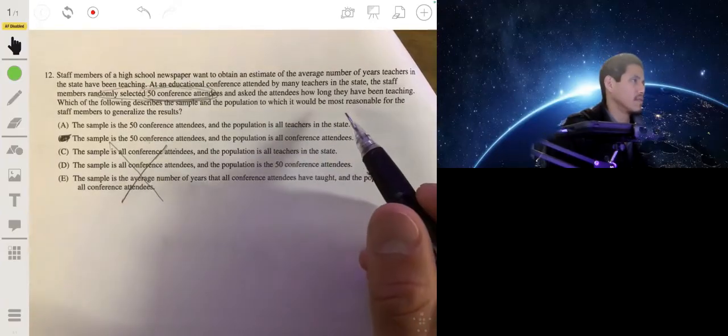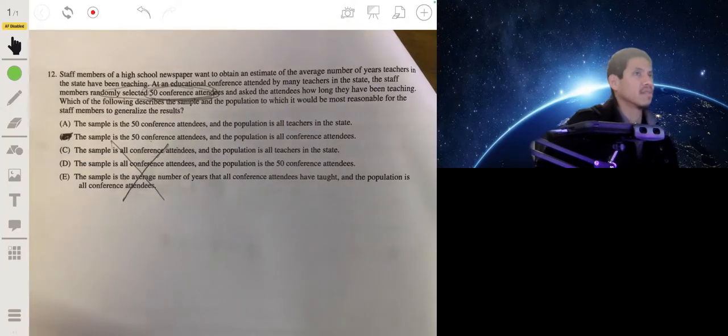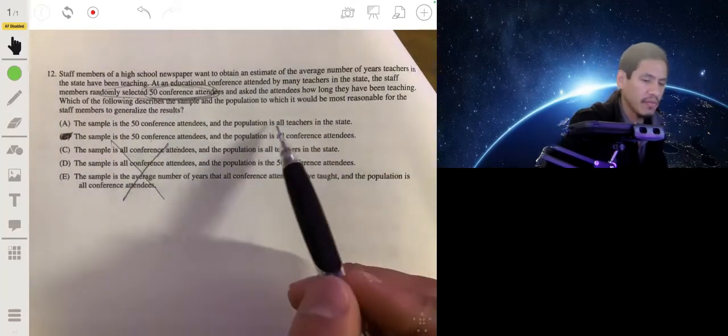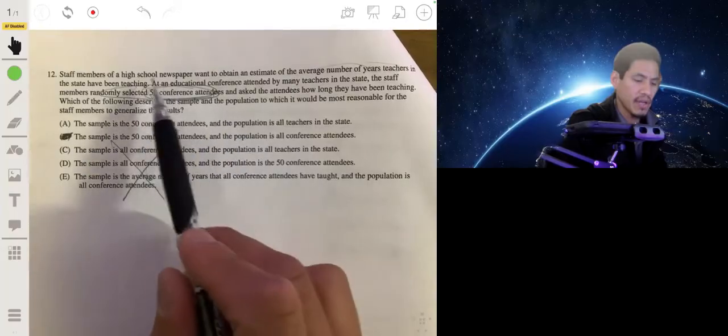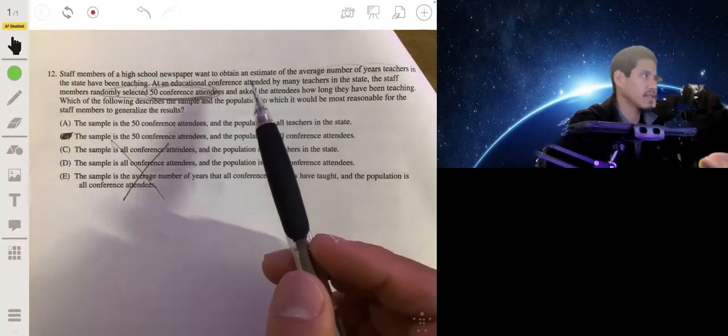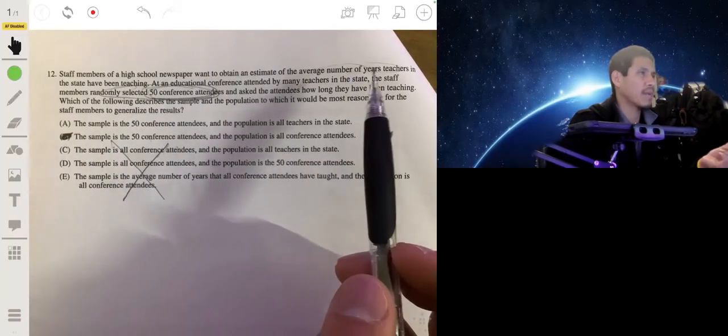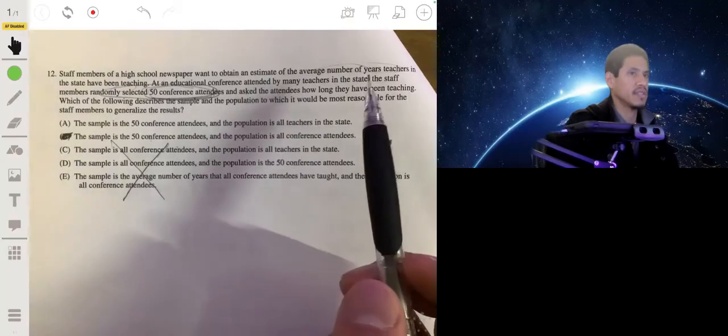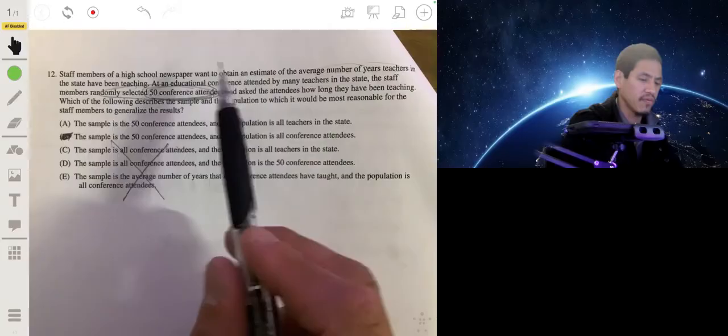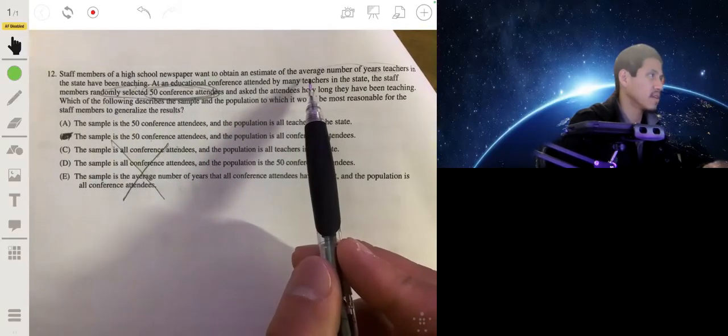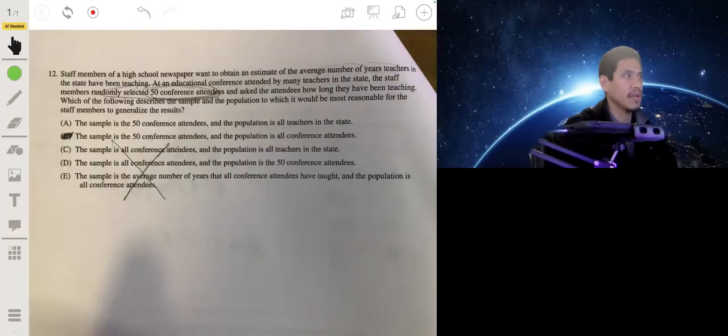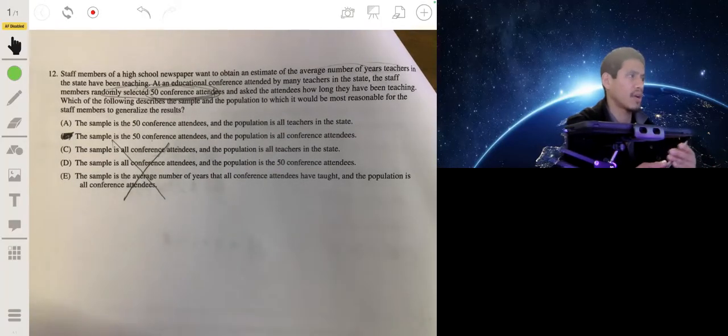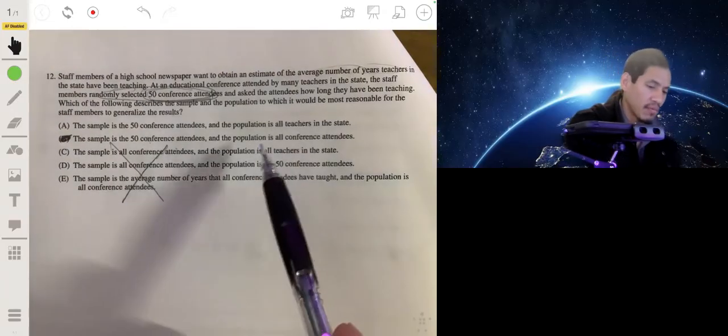This is a little tricky to understand. Even though their goal is to figure out the average number of years teachers in the state have been teaching, for them to do this correctly, statistically speaking, you would have to randomly select 50 teachers from all the teachers in the state. In this case, they only selected 50 from the ones that attended the conference, so it's not necessarily going to be representative of all the teachers in the state. You can argue that the teachers that attend conferences are different than the average teacher. So our answer would be B.